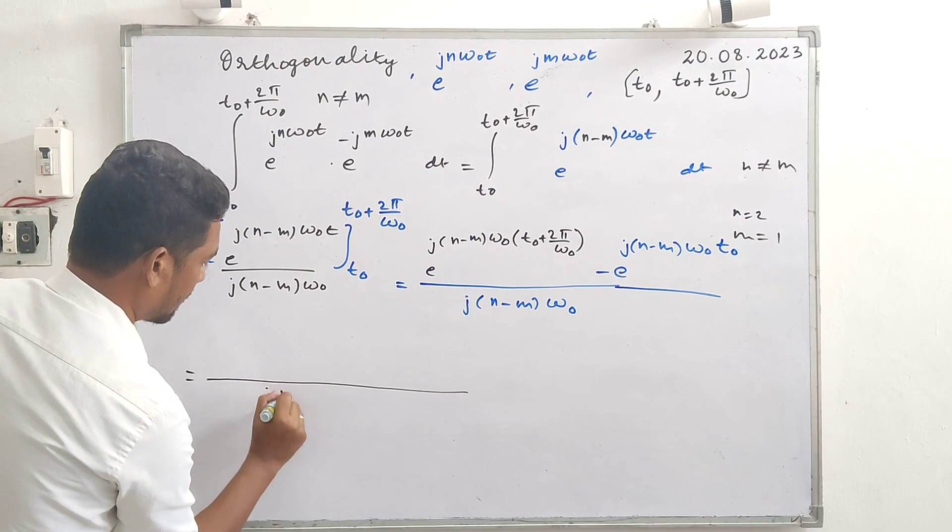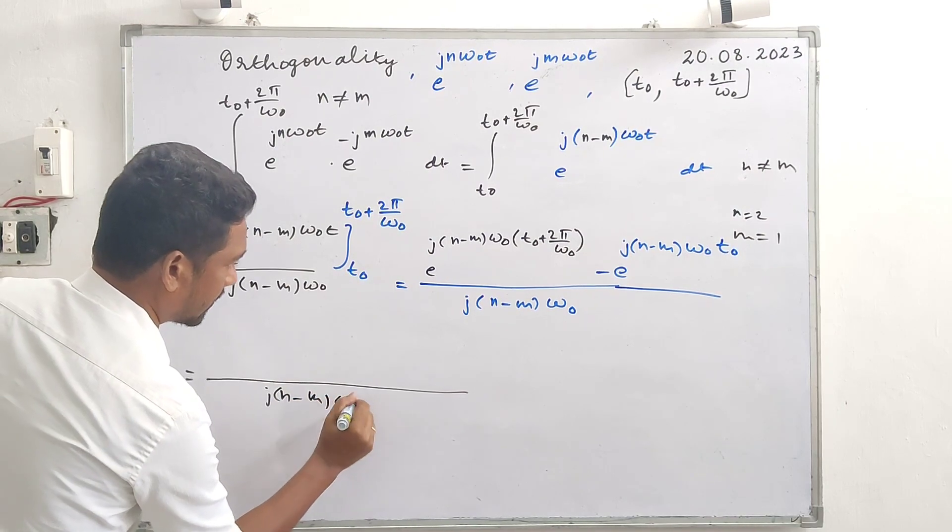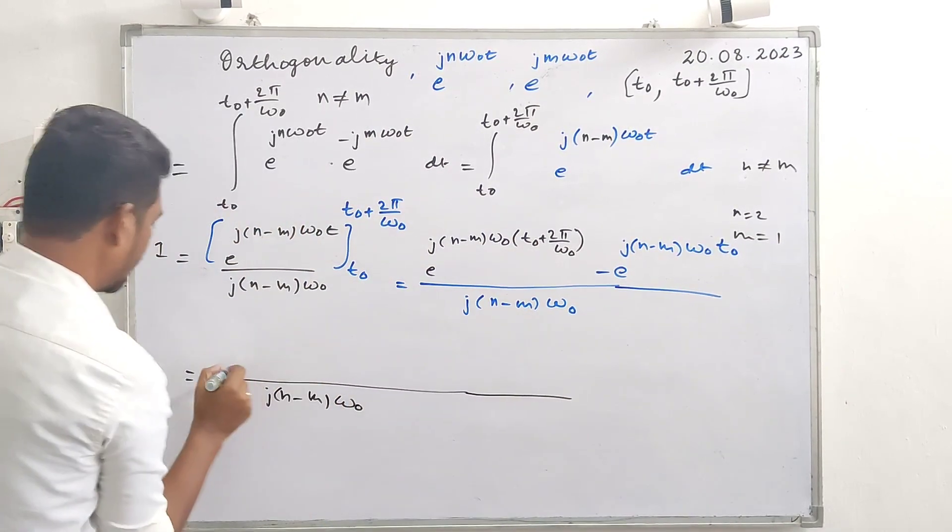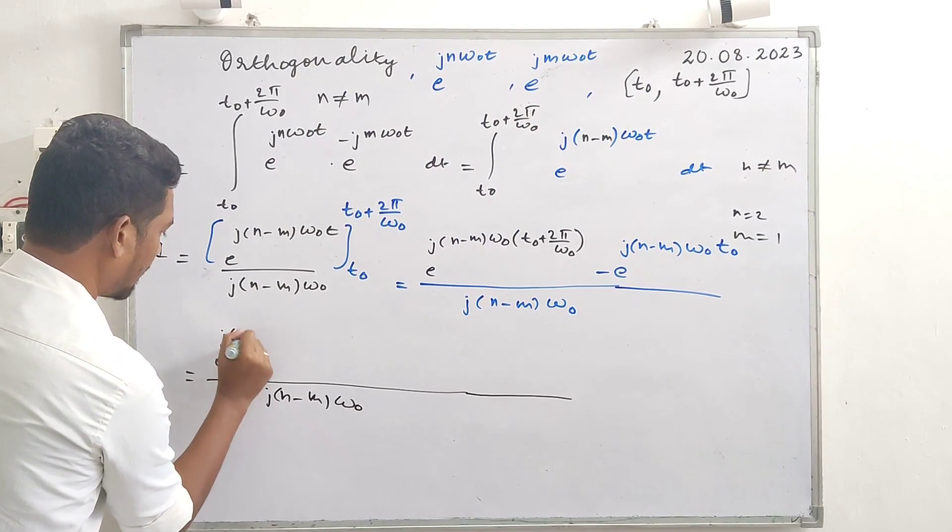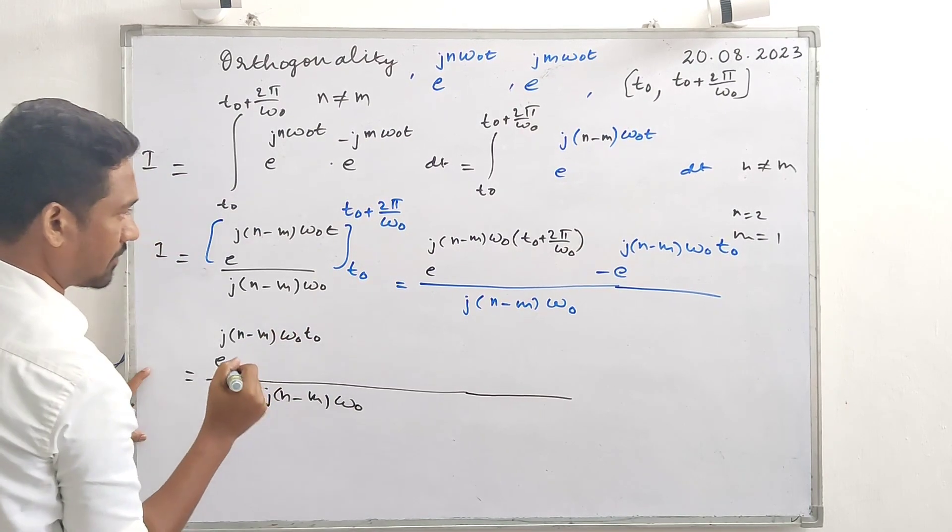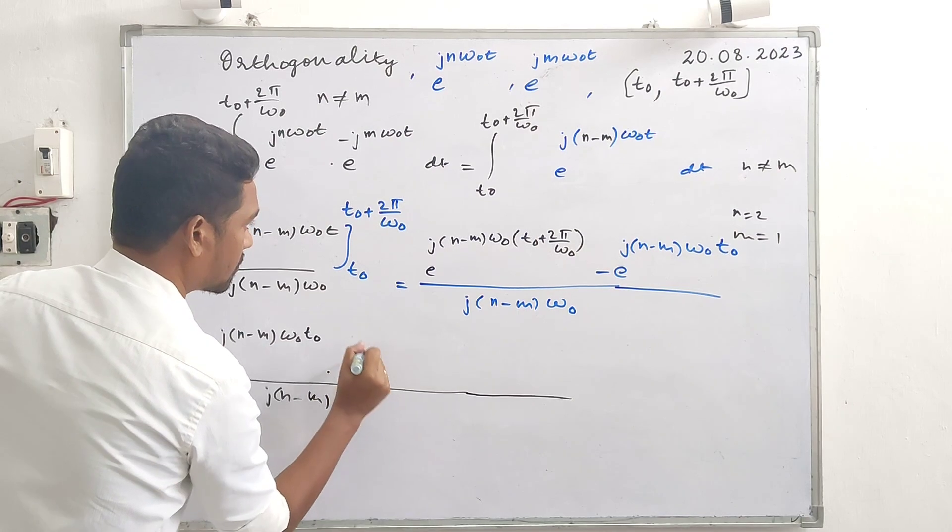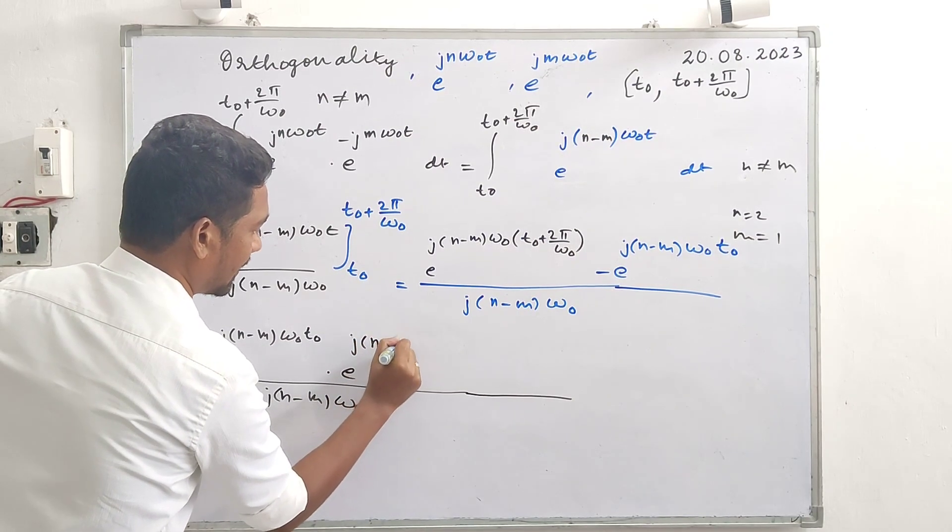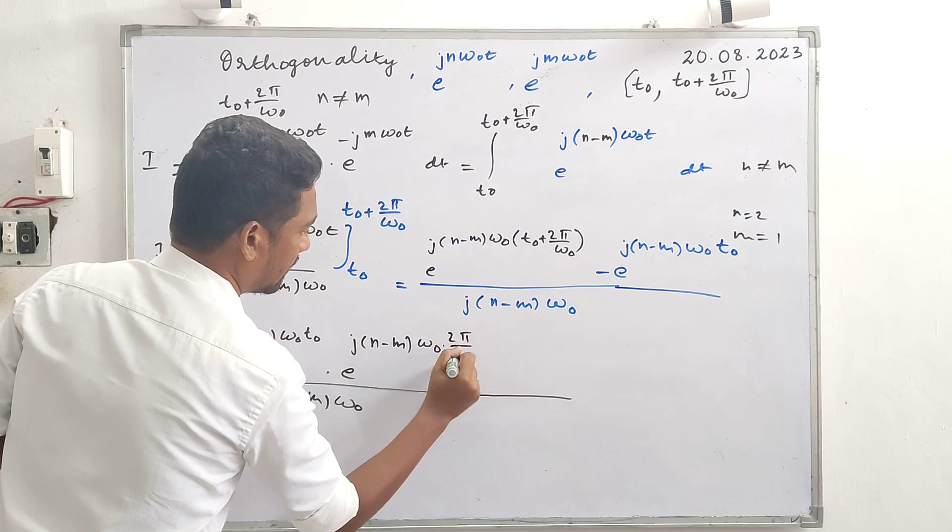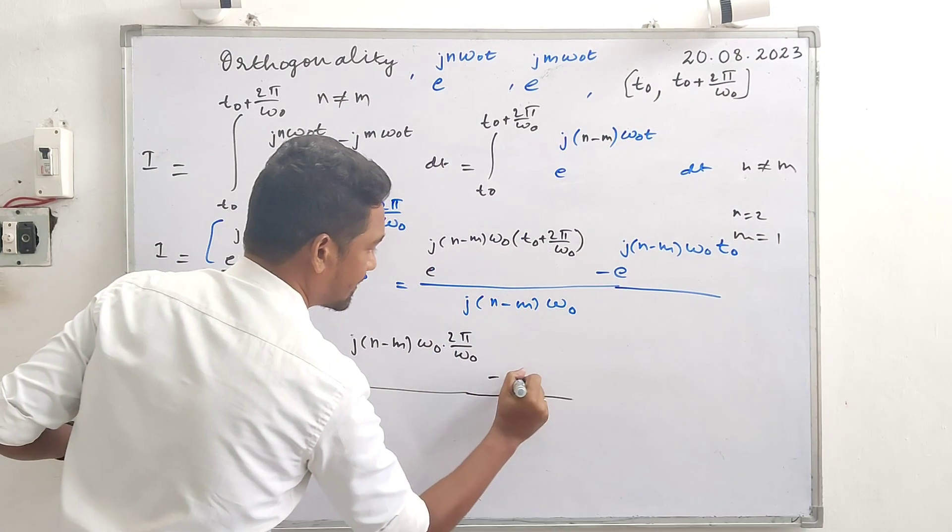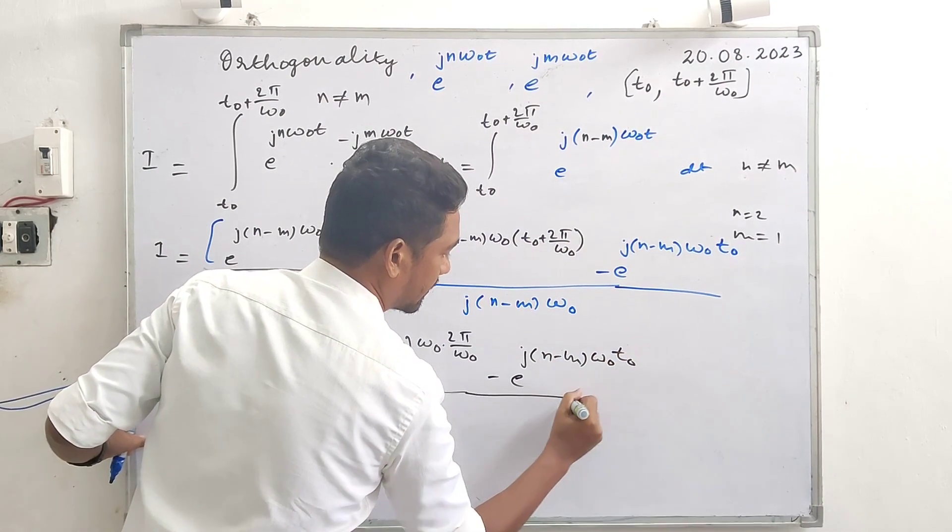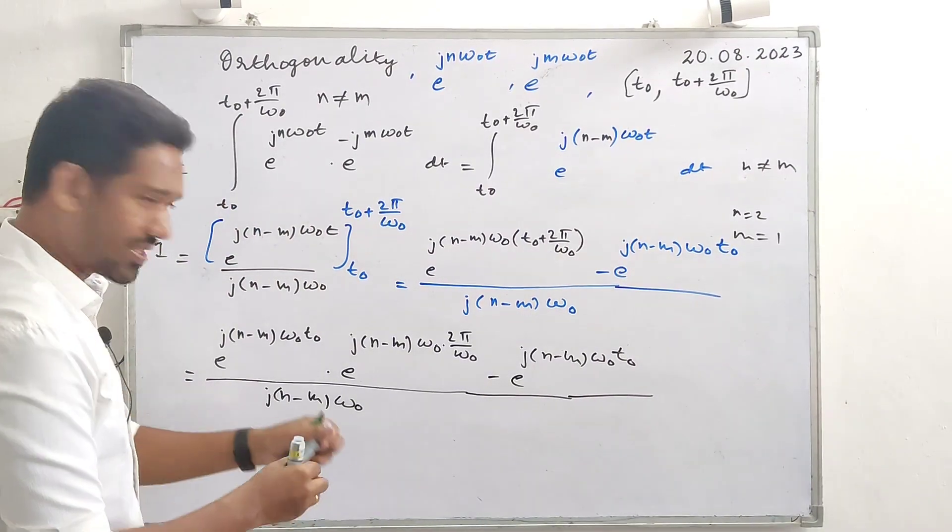Further, if you open the braces in the upper limit, denominator j n minus m omega naught. This product: e rise to j n minus m omega naught t naught into e rise to j n minus m omega naught into 2 pi by omega naught multiply.